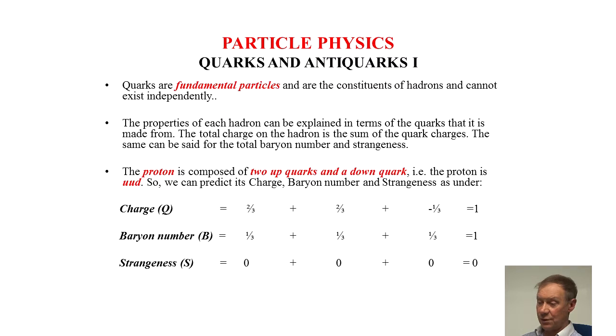The same can be said for the total baryon number and strangeness. The proton is composed of two up quarks and a down quark. I.e. the proton is UUD. So we can predict the charge, baryon number and strangeness as shown below.